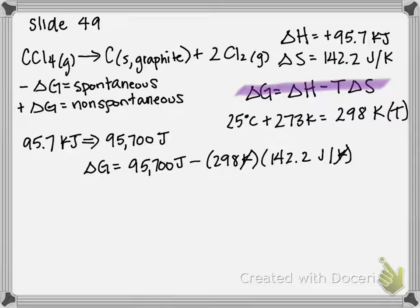So if we multiply the 298 K by the 142.2, we should get 42,400 joules, and then if we subtract those two from one another,